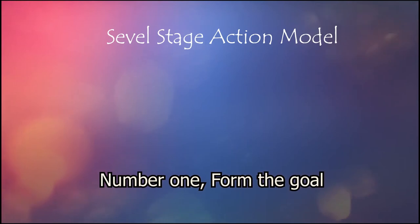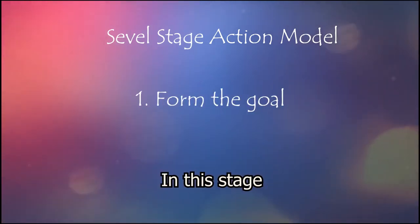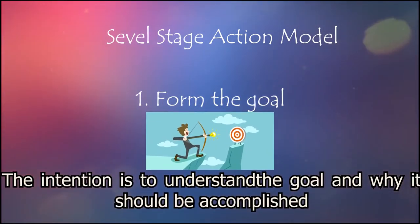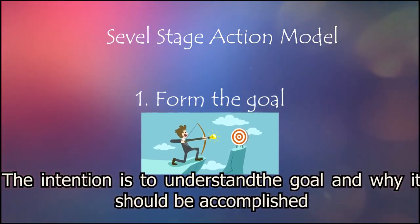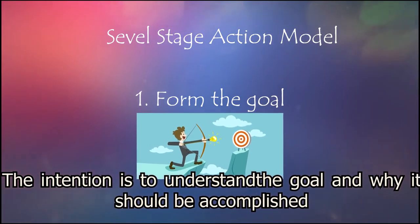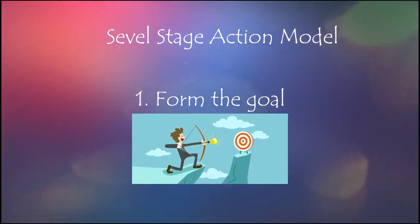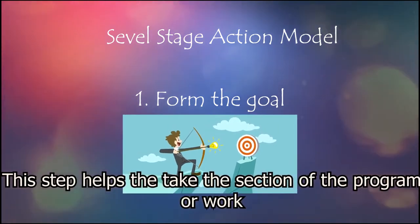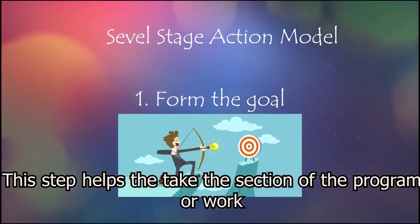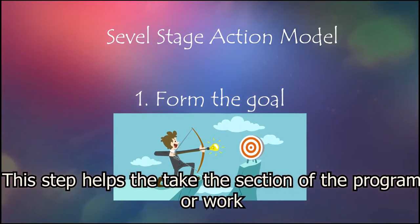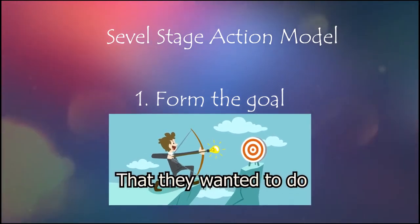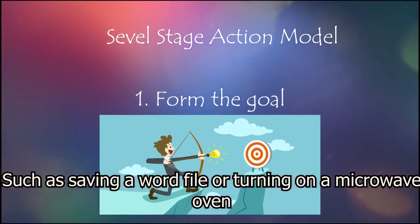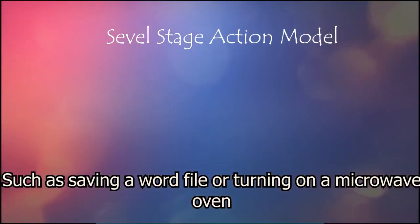Number 1: Form the goal. In this stage, the intention is to understand the goal and why it is to be accomplished. This step helps the user to identify the section of program or work that they want to execute, such as saving a word file or turning on a microwave oven.